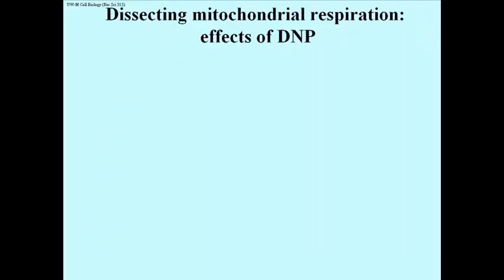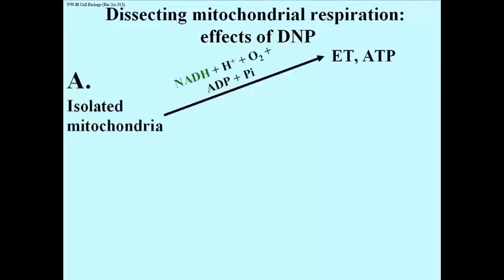The first clues came from the effects of a respiratory poison called dinitrophenol or DNP. Mitochondrial isolates could oxidize NADH or FADH2, consume oxygen and make ATP, as suggested here.